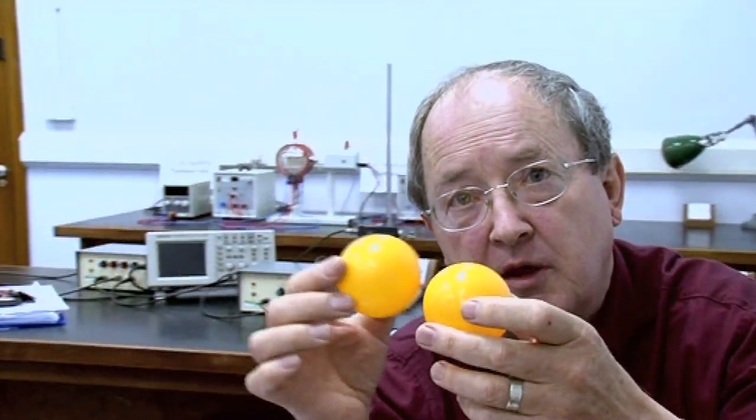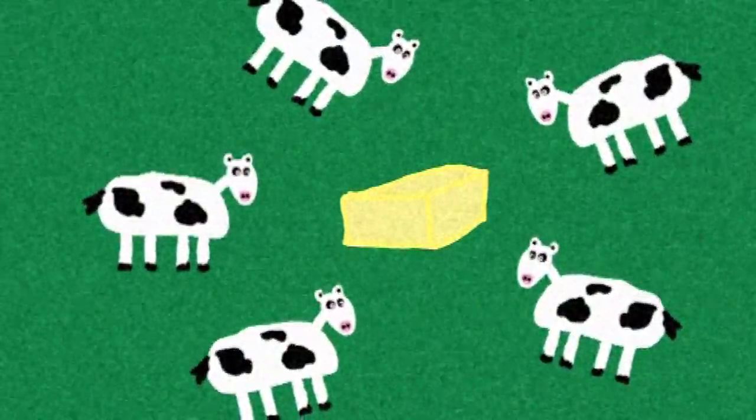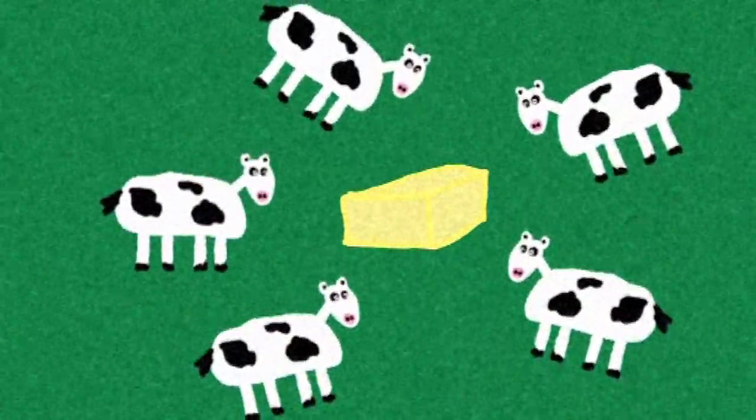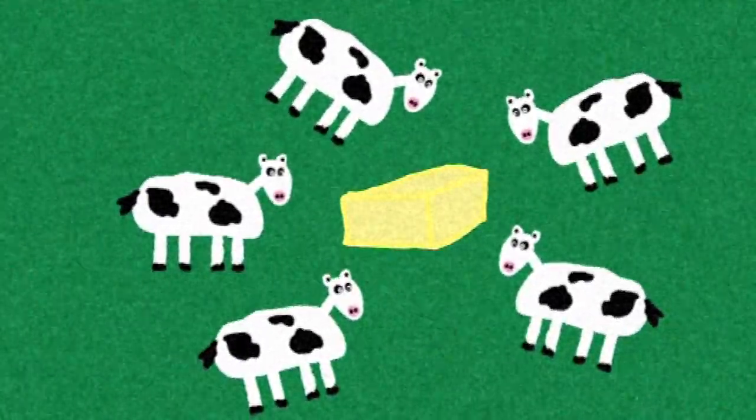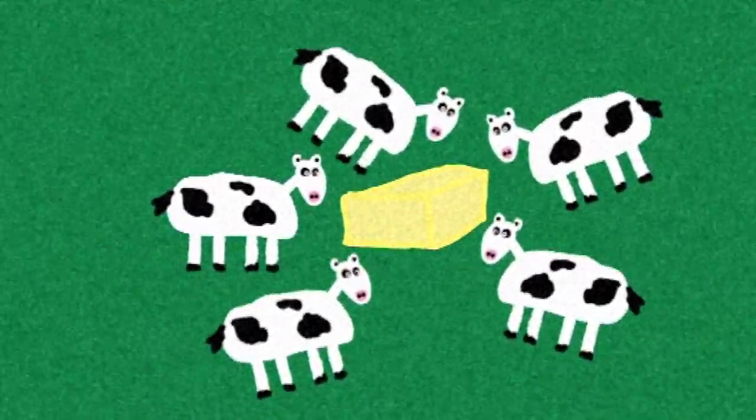If I put a big bale of hay in the middle of a field and a hundred cows all came because they wanted to have it and they all kind of gathered around it, I haven't created surface tension within cows, have I? Surely just because there's a big round blob doesn't mean there has to be surface tension.